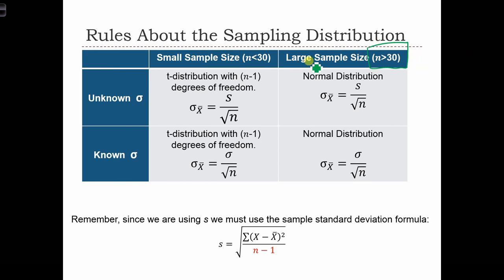So in the case when the sample size is greater than 30, we can assume that the sampling distribution is normal. But when sigma is unknown, we're going to calculate the standard error of the mean with the sample standard deviation. And when sigma is known, we're just going to use sigma.